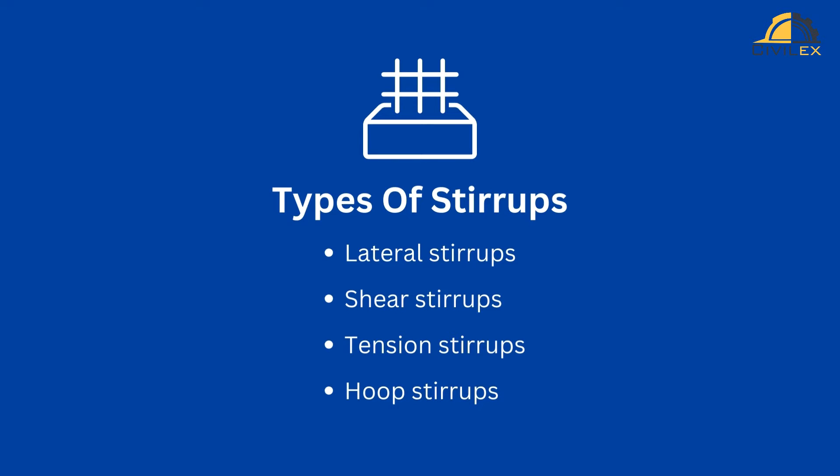The last primary type of stirrups is hoop stirrups, typically made from two steel bars bent into a circular shape. In addition to these types, spiral stirrups are also used in reinforced concrete construction, typically made from two steel bars bent into a spiral shape.